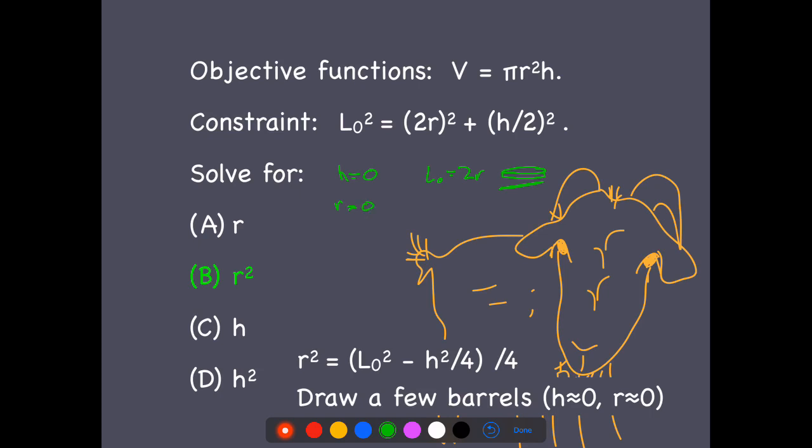And then if r is equal to zero, that means we're dealing with a very tall, narrow barrel. And it's so narrow its r is equal to zero. L₀ has to go from here to that corner. And so in this case, we have L₀ is equal to h over 2. So these are the two extremes that I can go to. I can't go beyond that.